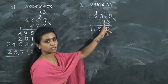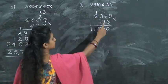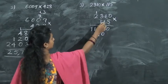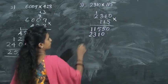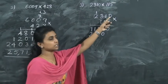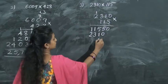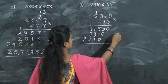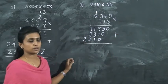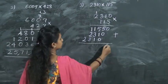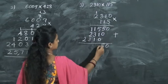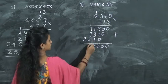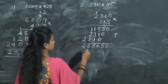Now multiply this 1 with all these numbers. 1 zeros are 0. 1 ones are 1. 1 threes are 3. And 1 twos are 2. Now want to add all these numbers. Here comes 0. Here 5. Then 6. 1 plus 3 is 4, plus 1 is 5. Then 5 plus 1 is 6, and 2.